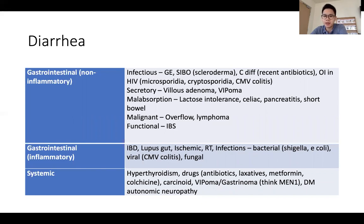For non-inflammatory causes, infections such as mild gastroenteritis, SIBO from scleroderma, C. diff, or opportunistic infections in the context of HIV where there are multiple causes. Secretory diarrhea can occur in villous adenoma or VIPoma that can be associated with MEN syndrome. Malabsorption from lactose intolerance, celiac disease, pancreatitis, or short gut syndrome. Malignancy can cause overflow diarrhea, or lymphoma itself can cause diarrhea inherently, and functional causes such as IBS.